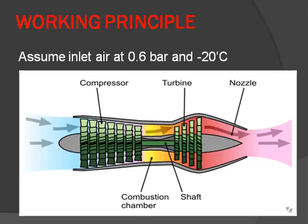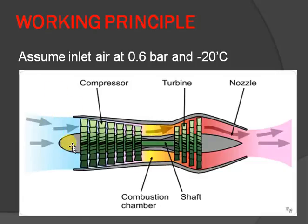Now for the working principle of turbojet engine. Assuming inlet air at 0.6 bar and minus 20 degrees Celsius — at high altitude, pressure is considered as 0.6 bar instead of the normal atmospheric 1 bar. The atmospheric air at 0.6 bar enters into the diffuser, which increases the pressure approximately from 0.6 bar to 1.5 bar.